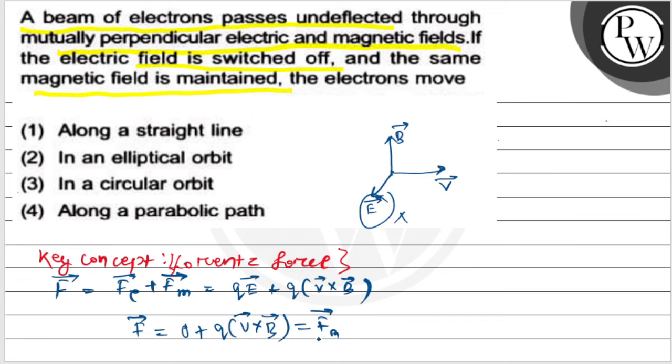So, as we know, magnetic force does not change the speed of the particle. Here the magnetic force will change the direction of the particle.